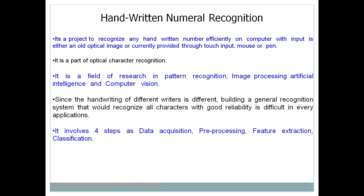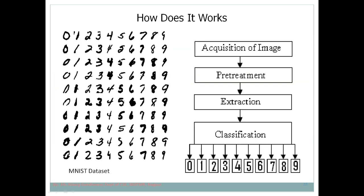In pre-processing, if the image is not in the appropriate format — if its shape, height, or width is not proper, or it is noisy — we pre-process it to bring it into an appropriate format that the model can understand. Then comes feature extraction: in deep learning, feature extraction is automated, whereas in machine learning it is manual. Finally, classification assigns the digit a label from 0 to 9.